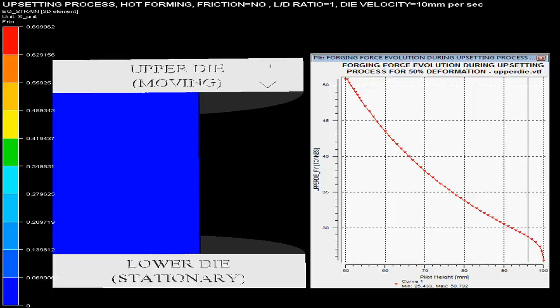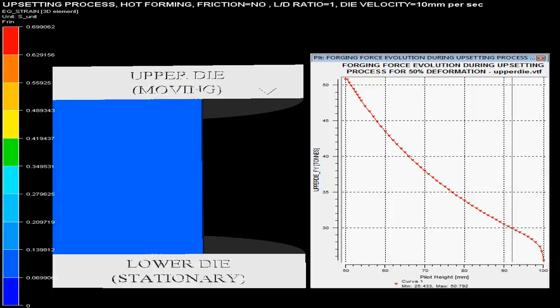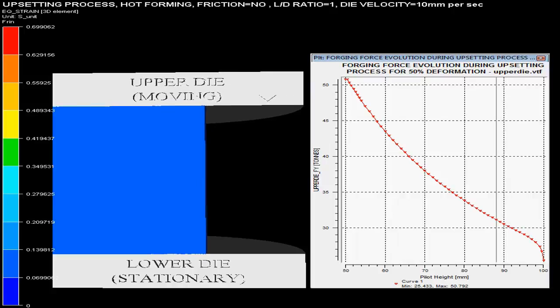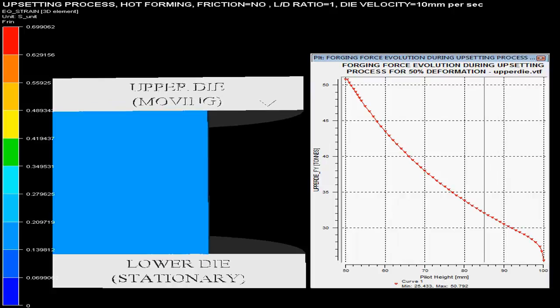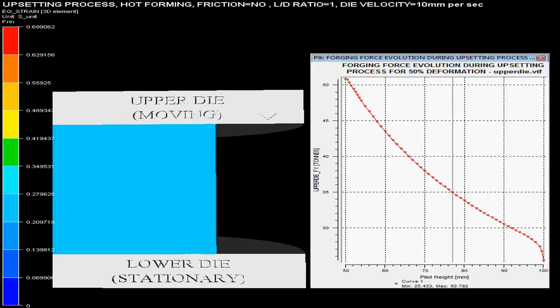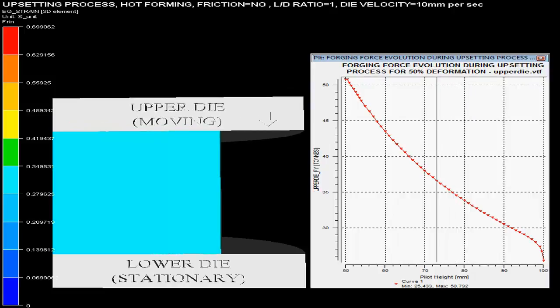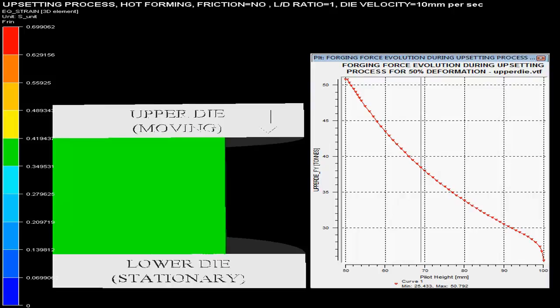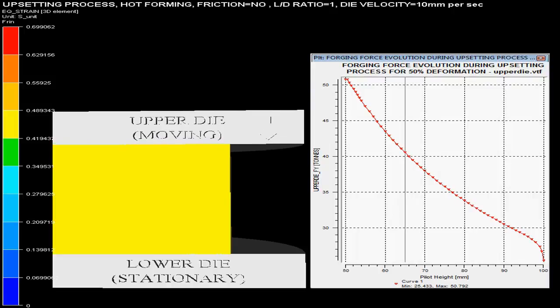The video shows the upsetting operation taking place using hydraulic press. The initial billet of aluminium having L by D ratio equal to 1 is taken hot. Zero friction for billet and dies is shown on the top end in the video. The upper die presses with the velocity of 10 mm per sec with lower die stationary.